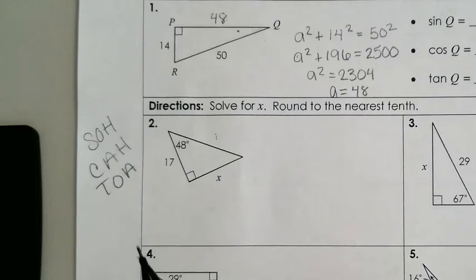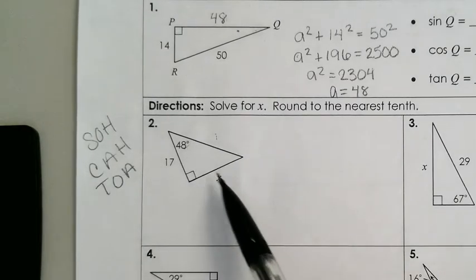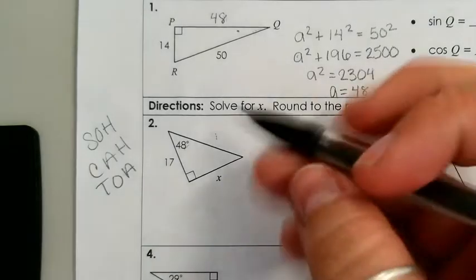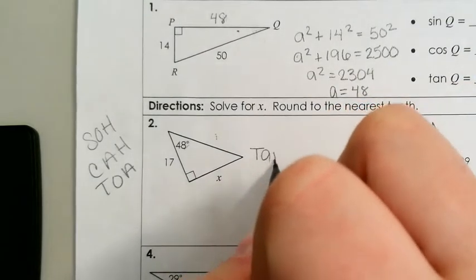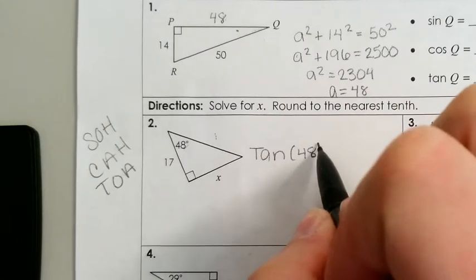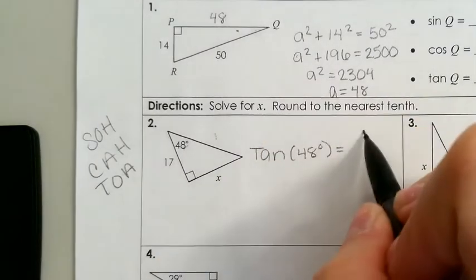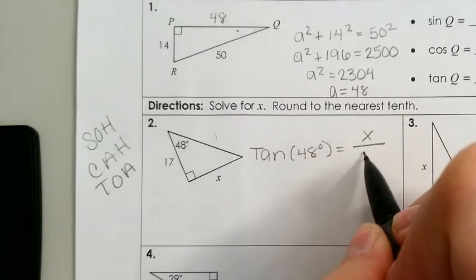Let's see if tangent is going to work. Looking at this 48 degrees, do we have the opposite side and the adjacent side? Yes. So we're going to do tangent of 48 degrees is equal to opposite over adjacent.